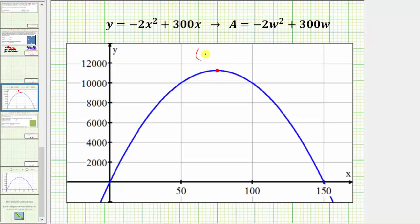where the first coordinate is going to give us the w value or width of the rectangle that will maximize the area of the garden, and the a-coordinate is going to give us what that maximum area would be.